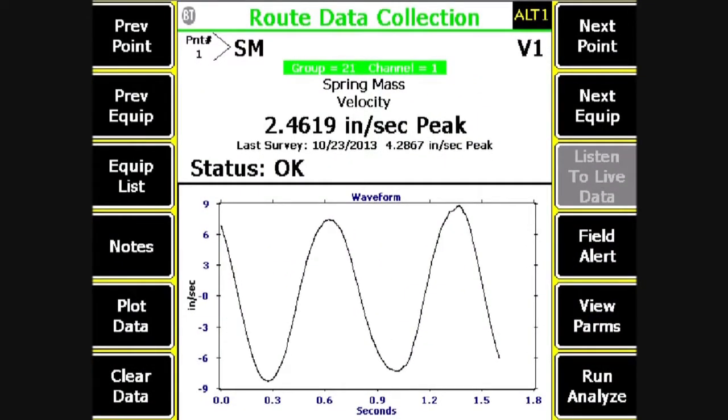The first reading is Velocity, and this is in inches per second. Velocity is referring to speed, the speed of the mass. And as you see, this is a purely sinusoidal waveform, which you would expect.